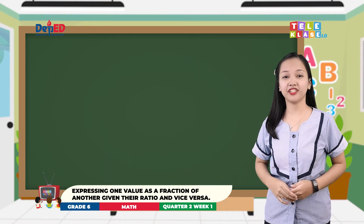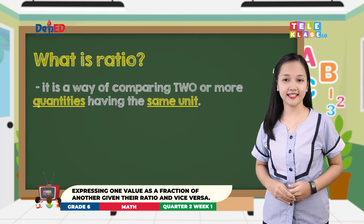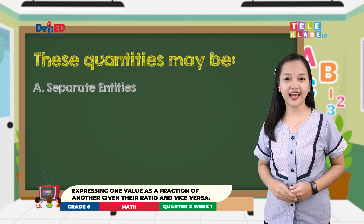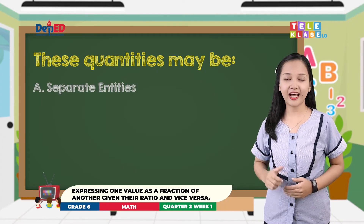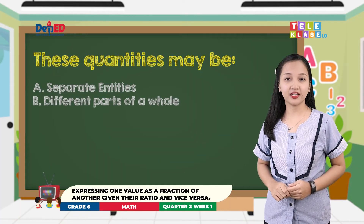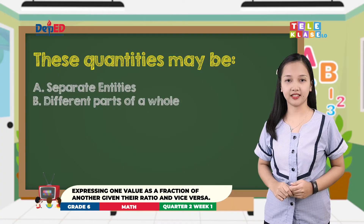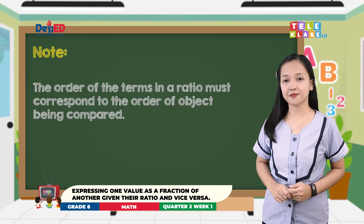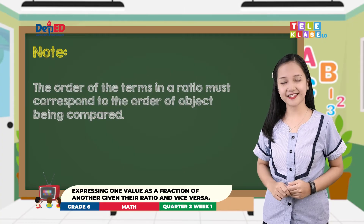Let us begin by defining ratio. Ratio is a way of comparing two or more quantities having the same unit. These quantities may be separate entities — we are comparing two things like boy and girl, pen and pencil — or different parts of a whole. For example, comparing the number of boys and number of girls in the same section or in the same family. Note: the order of the terms in the ratio must correspond to the order of the objects being compared. Here is an example.